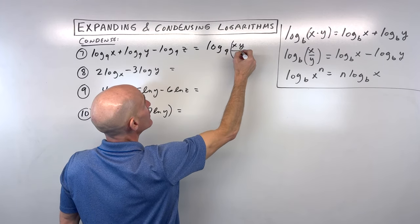Number 10: one option is to distribute the 1/2 first — giving 3/2 natural log of x plus 7/2 natural log of y. Another approach: bring up the 3 and 7 as powers first, giving natural log of x cubed plus natural log of y to the seventh, all to the 1/2 power. Adding logs means multiply the arguments: natural log of x cubed times y to the seventh, then the 1/2 becomes a square root. These approaches are equivalent — natural log of the square root of x cubed y to the seventh.